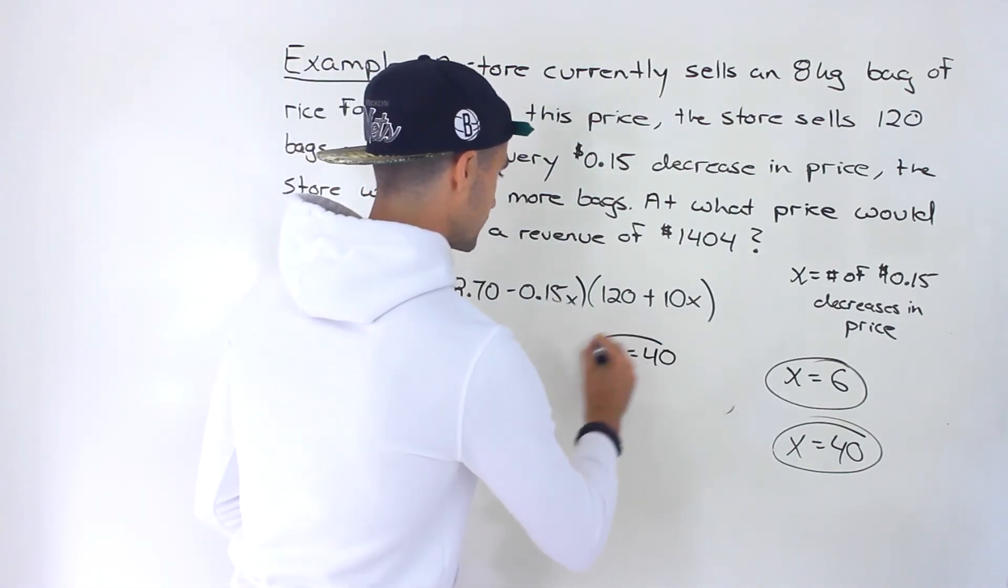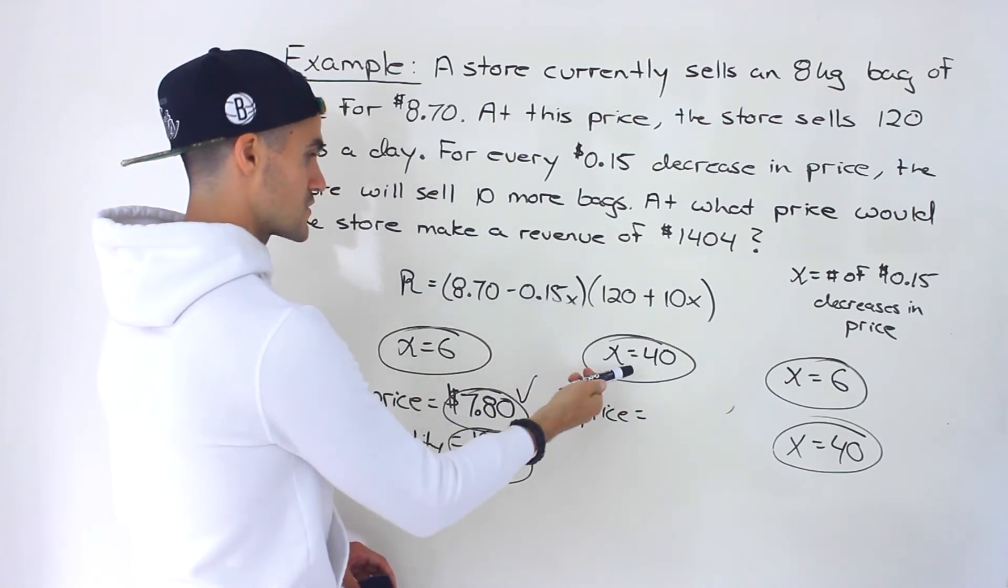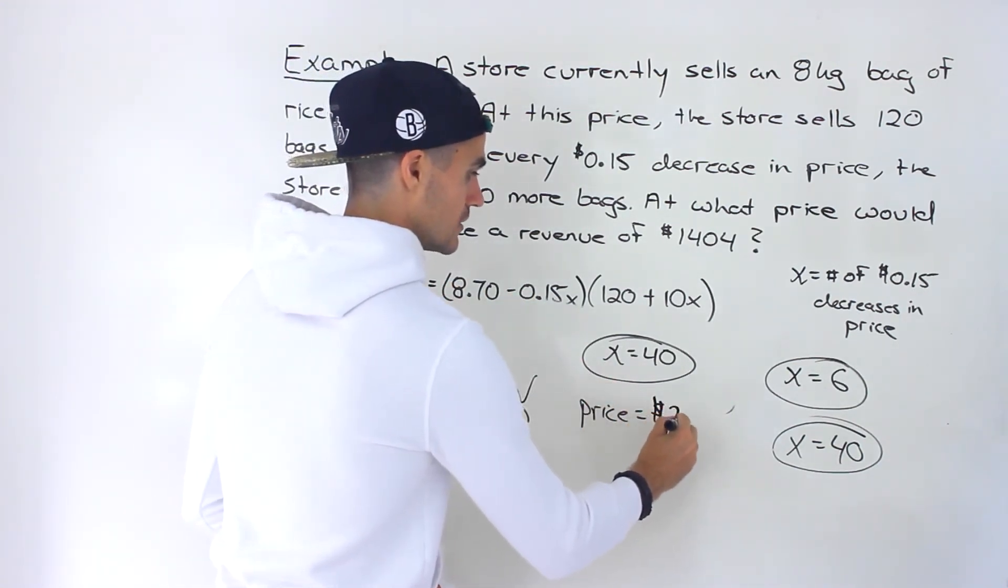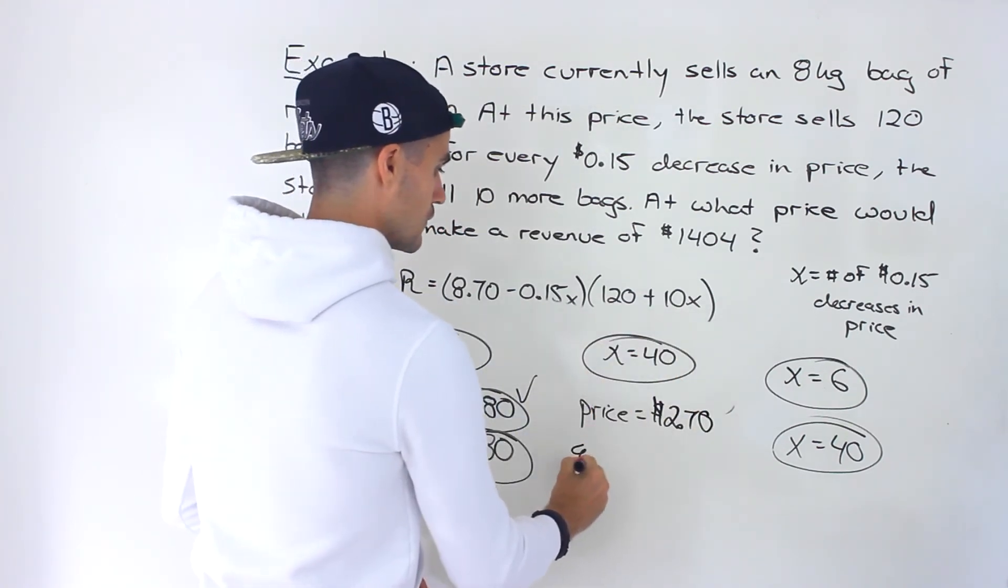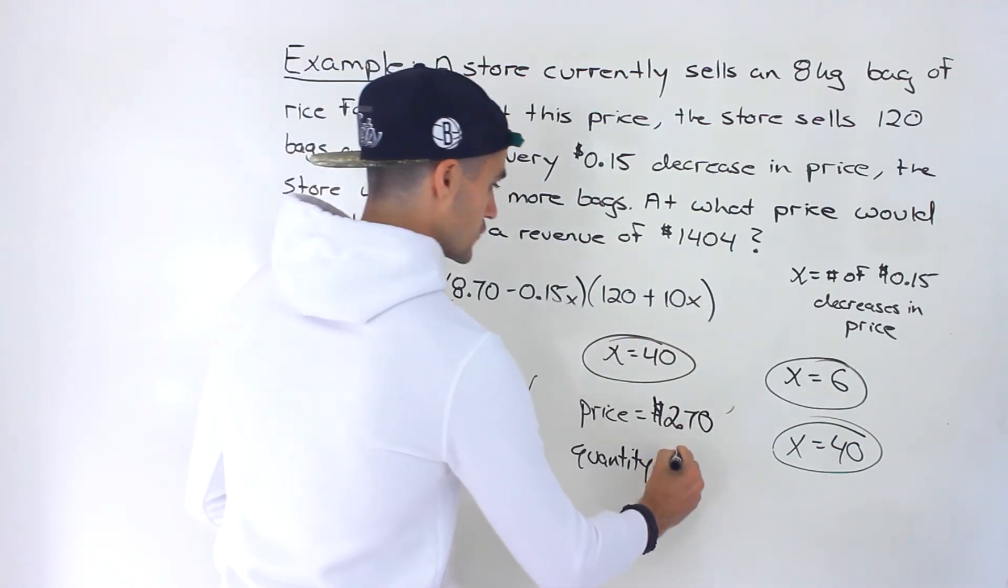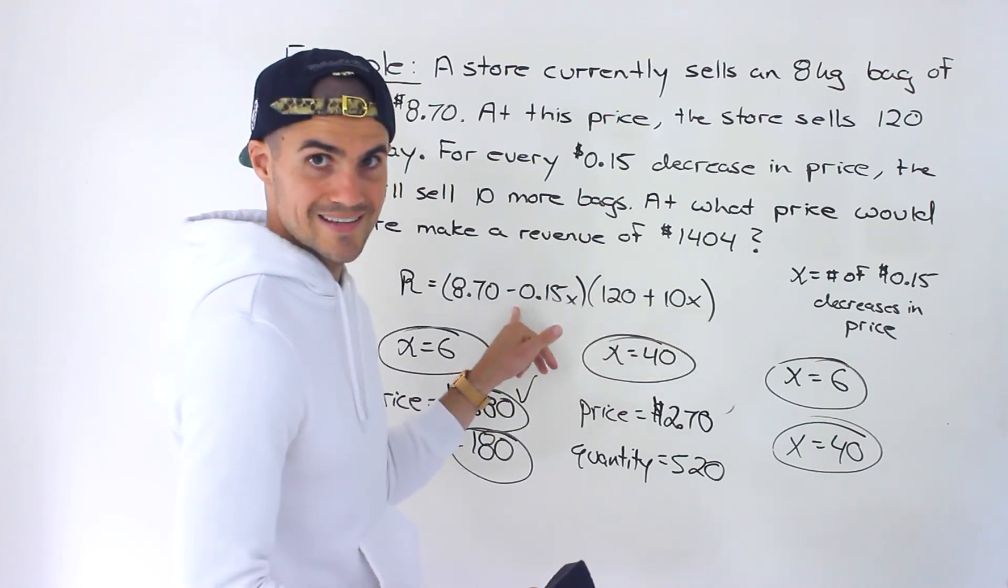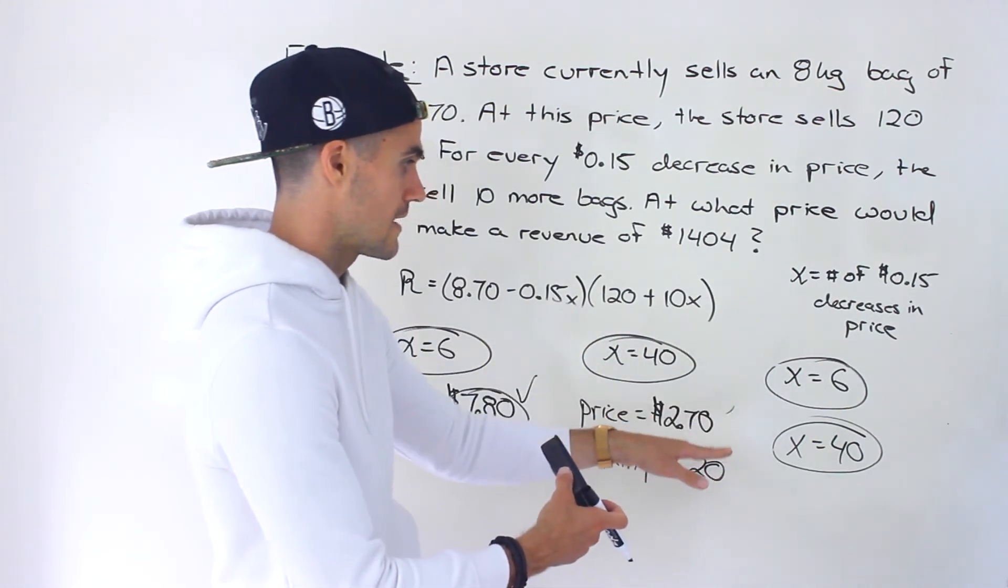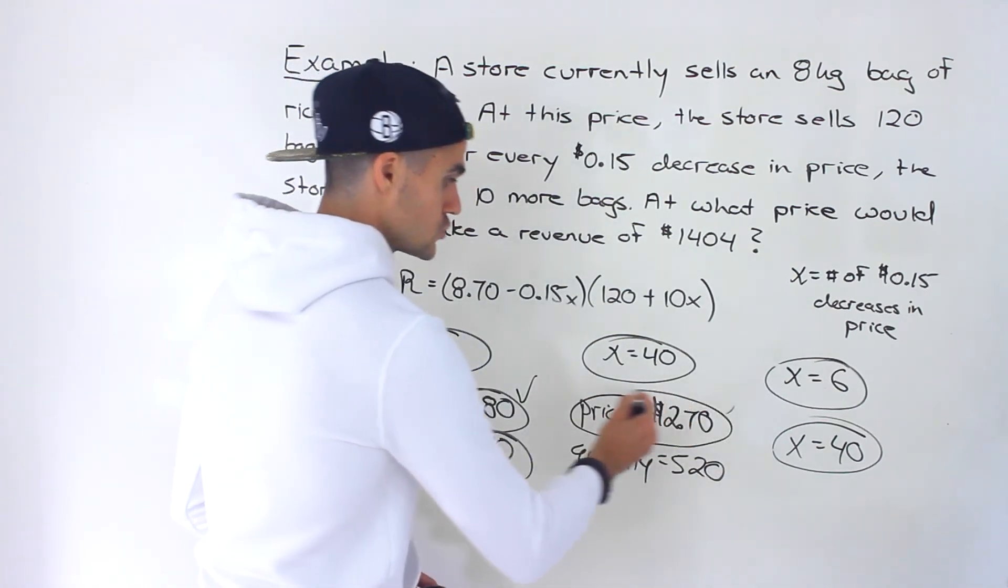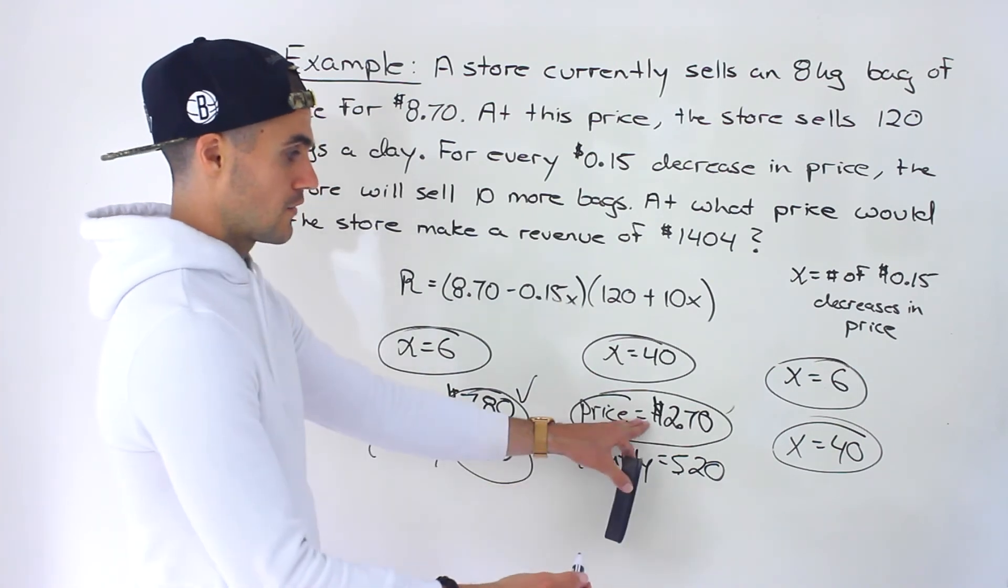Now, if X is 40, this is the other case, what would the price be? Plugging in 40 here, 0.15 times 40 would give us 6. 8.70 minus 6 would give us a price of 2.70. And then plugging in 40 here, we would have a quantity of 120 plus 10 times 40. So this would be 400, so this would be 520. So this is another case. Sometimes you'll get solutions where it's going to make one of these brackets negative, so then that solution wouldn't make sense. We would just ignore that. But both of these solutions are actually giving us positive numbers for the price and quantity. So this is another case where we could charge 2.70 per bag and then sell 520 bags.